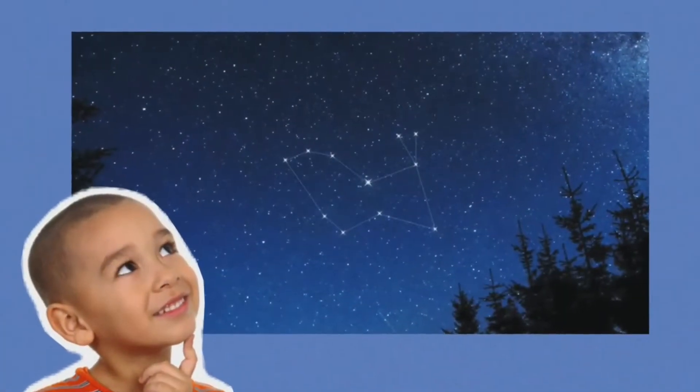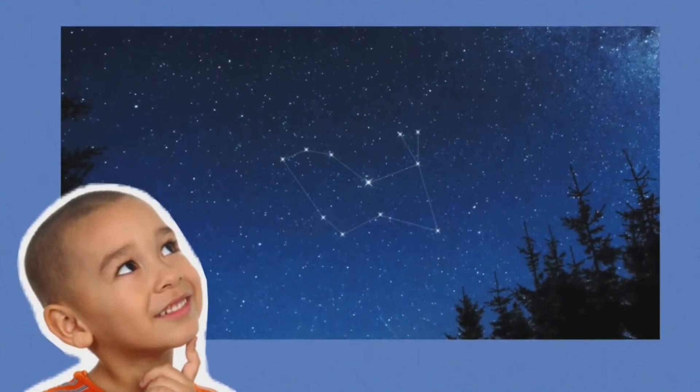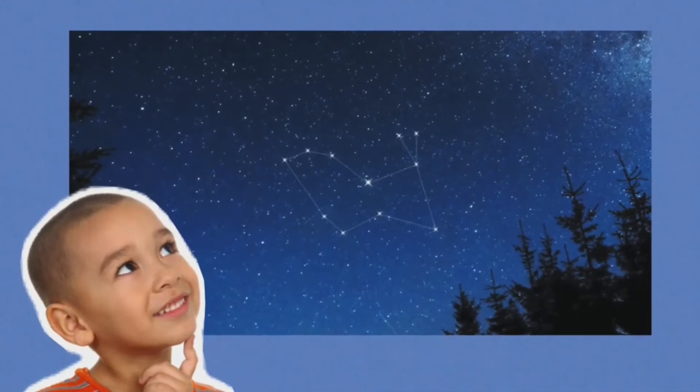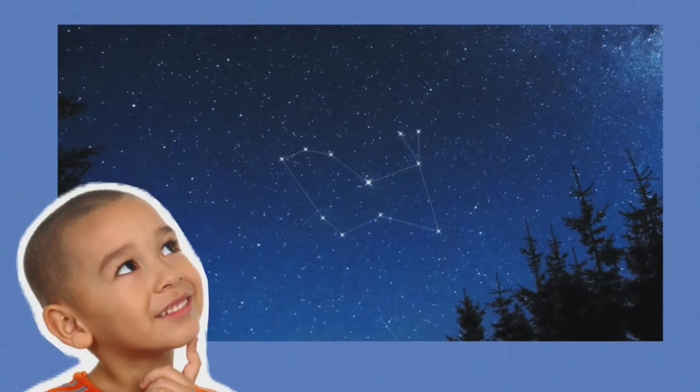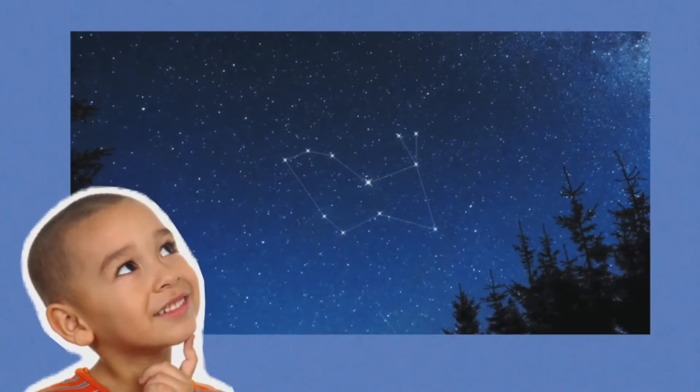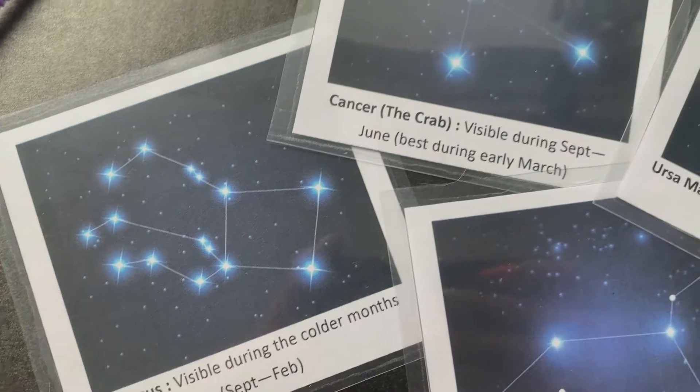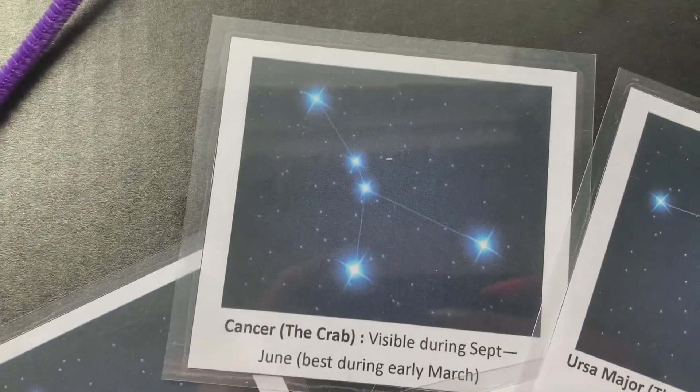So what is a constellation? A constellation is a grouping of stars in the sky. And these groupings form particular shapes and are given names of animals, people, and objects.